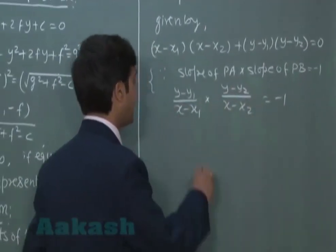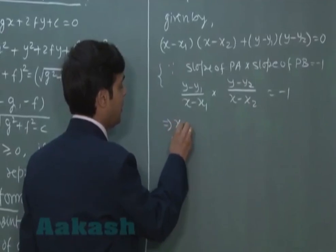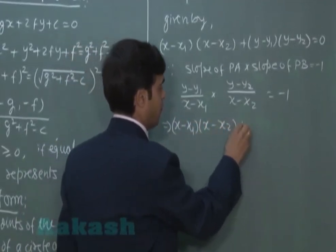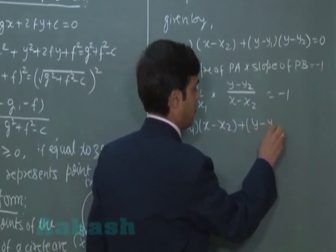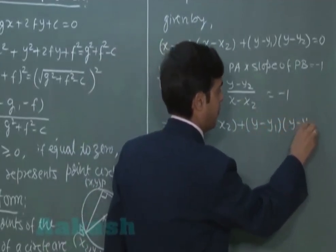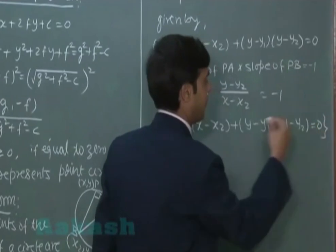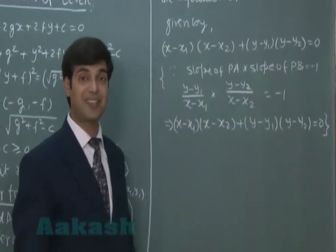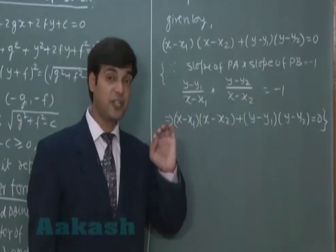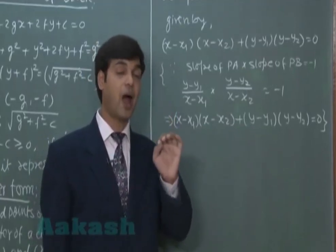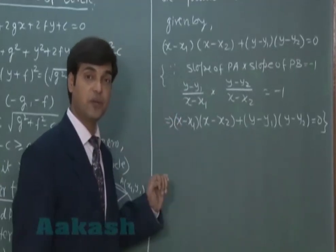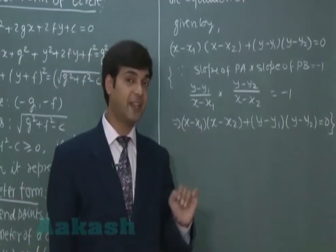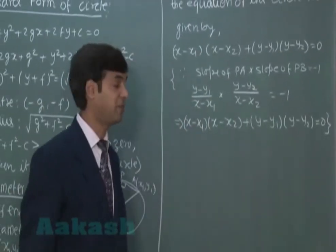Taking all terms to the left-hand side gives the required equation. This is the diameter form of the circle: if the extremities of the diameter are known, the equation is given in this form. Let us now talk about the parametric form of the circle.